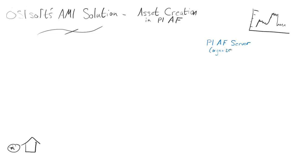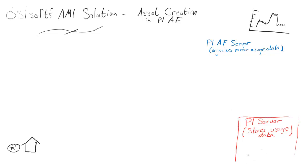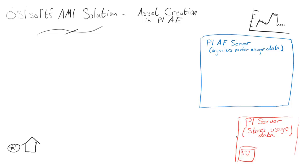To start with, we have the PI AF server, and it is responsible for organizing meters into assets, or organizing all that usage data so we can make sense of it. Because the PI server has thousands and thousands of points of data, but that's useless to us if we have no way of organizing it, of looking into it, of looking for a specific meter. So again, we have an archive — it has lots of data in it — and the AF server makes sense of that data, and allows PI Coresight, or PI ProcessBook, or PI Datalink to display that data. You might think of PI AF as taking the meters and reorganizing them back into the original households they came from.